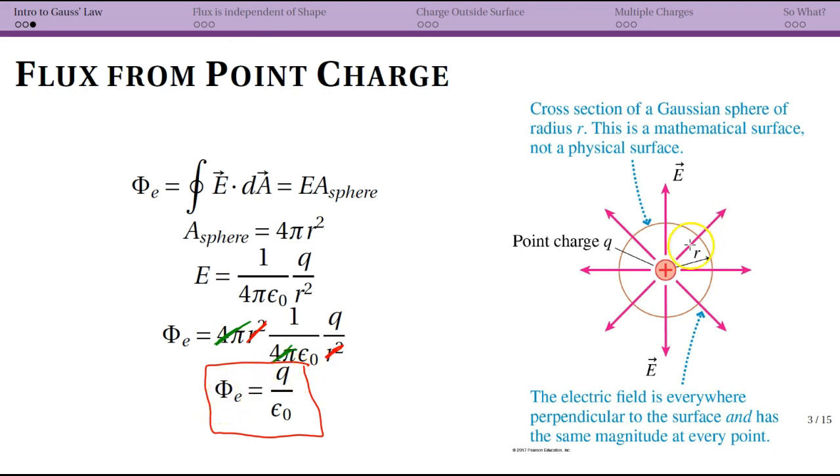We say that the flux we get is q, the point charge—the amount of point charge at the center—over ε₀, which is the constant that keeps coming up in our equations. Notice also that if q is negative, you have a negative flux. If q is positive, as we've kind of drawn here, then you would have a positive flux.